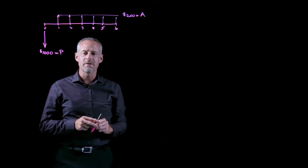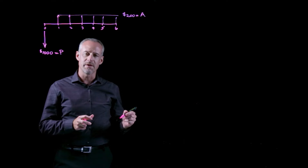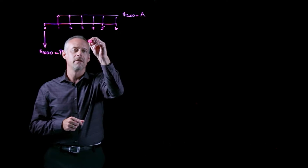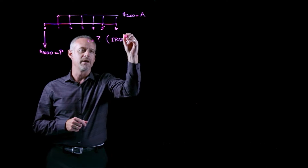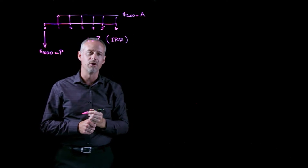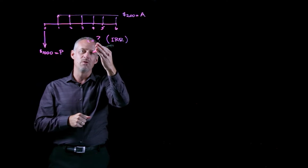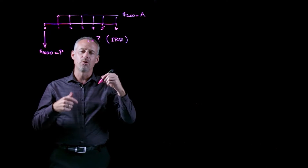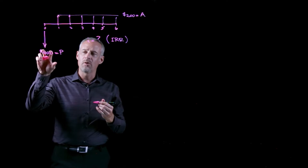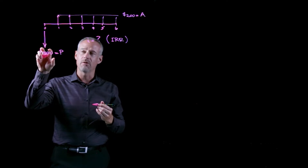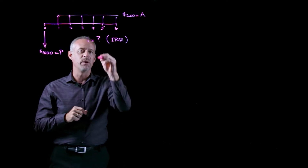In questions where we're asked to find the internal rate of return for a project or an investment, what the question is really asking is for us to find the I. In this particular problem, they ask us to find the internal rate of return. All it is: I already have an A, I have a P — what is the value of I that creates the equivalence? How do I make $1,000 today, at time zero, equal to a $200 annuity for six time periods?